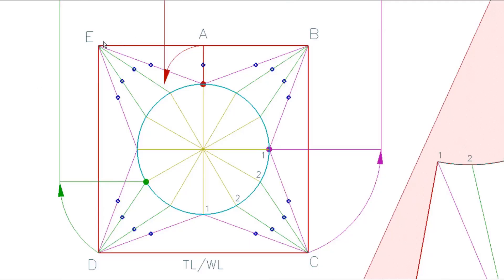So EB, BC, CD, and DE are already true lengths for the base. Technically this top is a true length going around, but because it's curved we have to find another solution. To start, we're going to triangulate — drawing construction lines from the base corners to each point on the top of the circle. Whenever you see a circle, it's automatically divided by 12.